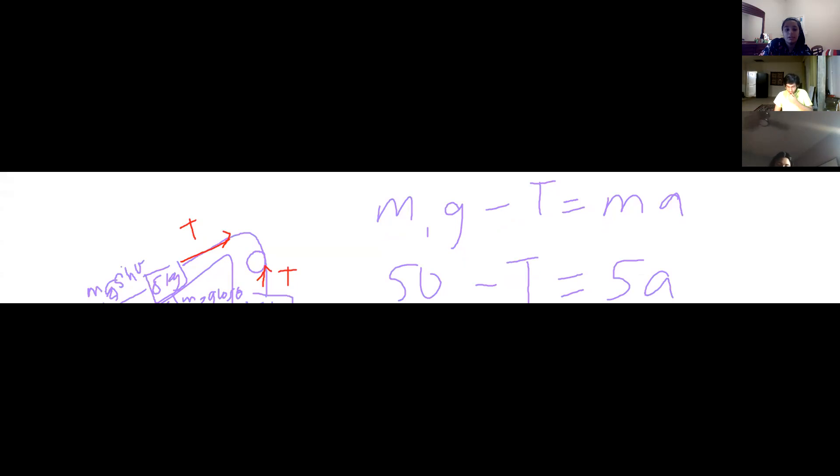To find tension, you can just plug the acceleration back into one of the original equations. The reference solution got 0.75 because they used g = 9.8, so 0.75 is essentially the same answer.